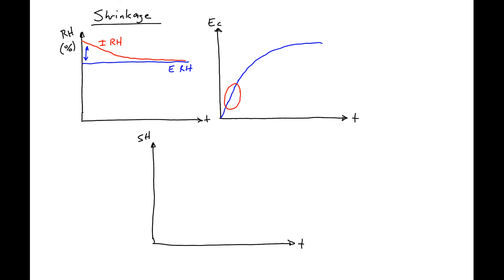So what this means is that our shrinkage is going to have the highest rate right at the beginning. And then as our concrete gains stiffness and our internal relative humidity approaches our external relative humidity, this is going to level out. And you'll have the majority of your shrinkage occurring in the first four months.